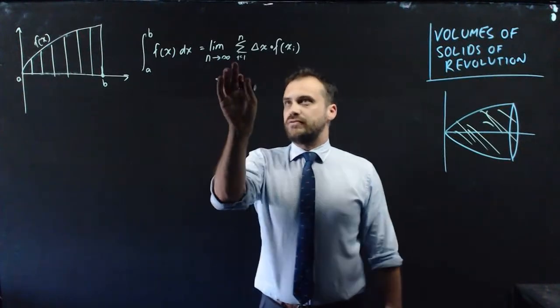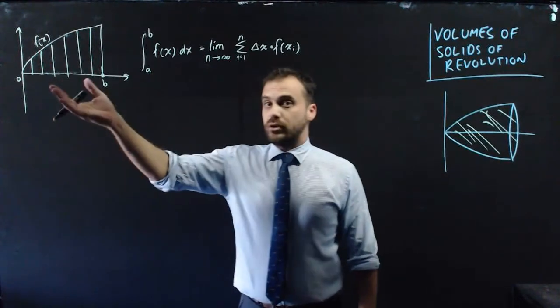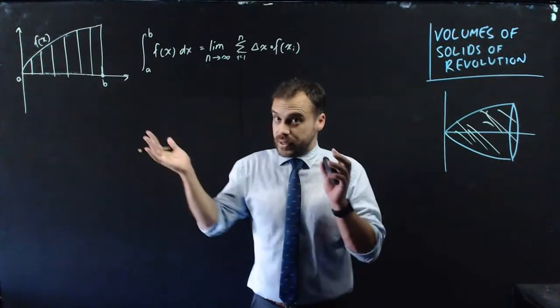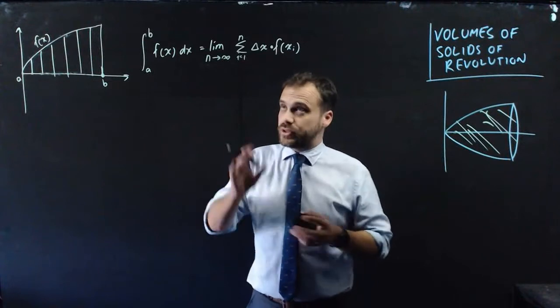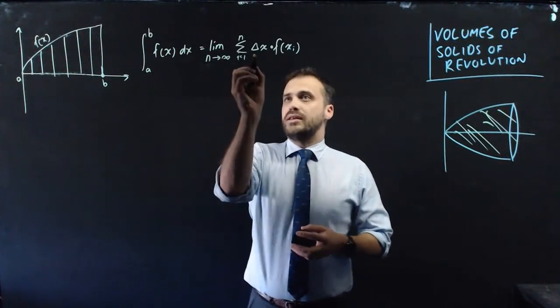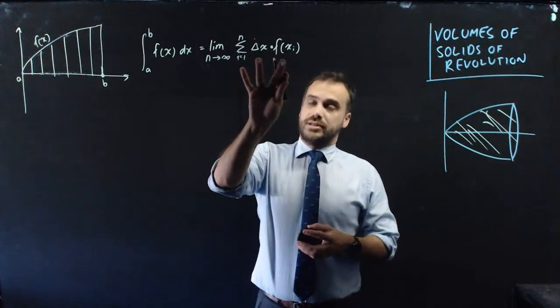The limit as n approaches infinity, where n is the number of rectangles. So we're infinite or very close to an infinite number of rectangles. And then we do this little sum here, or this product here.